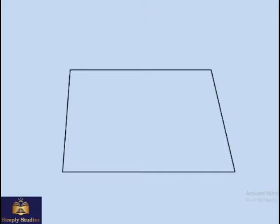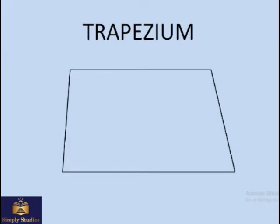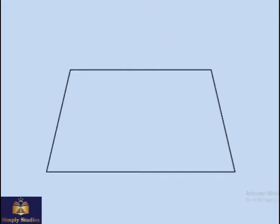Now if two of these sides are parallel, what we get is known as a trapezium. So this is a trapezium if in a trapezium these two lines, as we can see, are parallel.